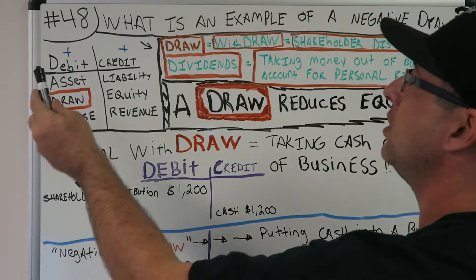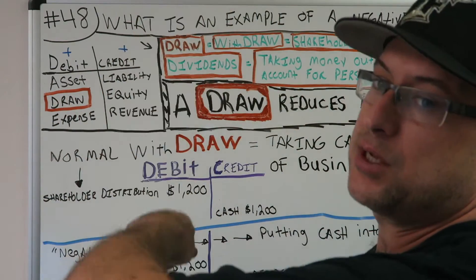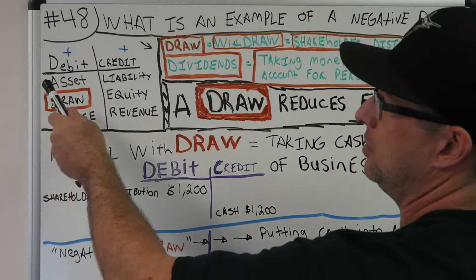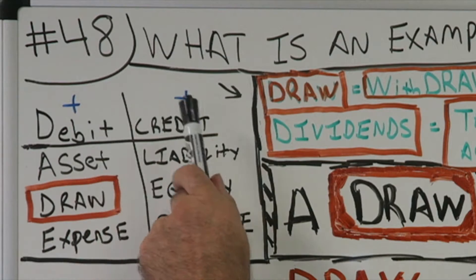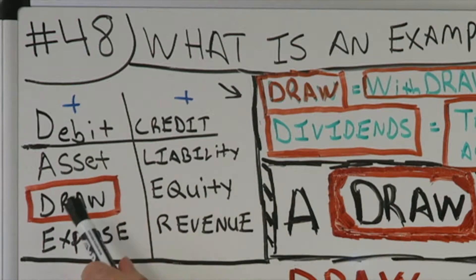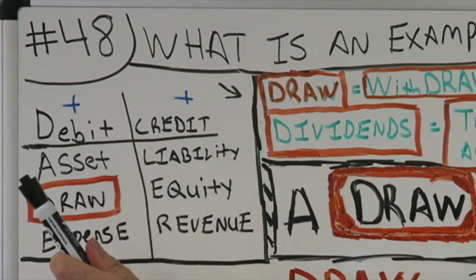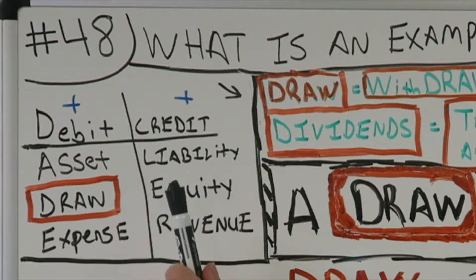Negative draw — let's talk about a draw. Let's talk about my mapping system: DC AID alert — debit, credit, asset, draw, expense, liability, equity, revenue. I circle draw because the question is about a negative draw.